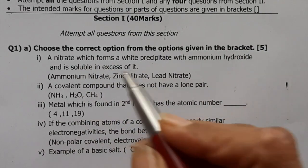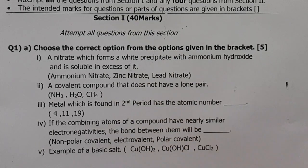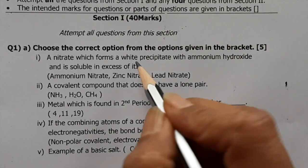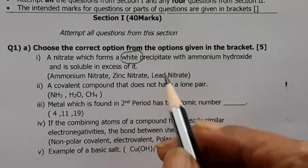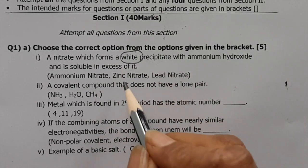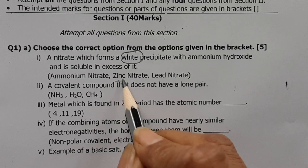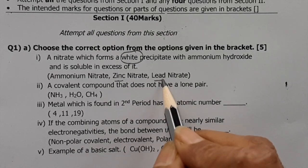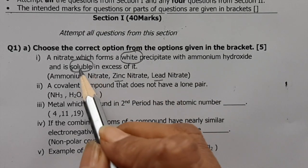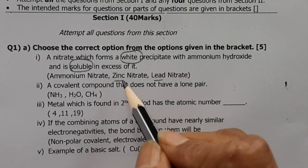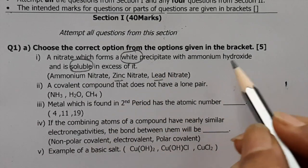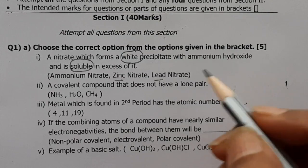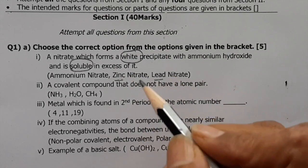Question 1: Choose the correct option. (a) A nitrate which forms a white precipitate with ammonium hydroxide. If it is a white precipitate, it could be gelatinous white for zinc and lead — chalky white — but it should be soluble in excess. Zinc is the one which is soluble in excess of ammonium hydroxide because it forms a tetra-amine zinc compound, so zinc is the correct answer.